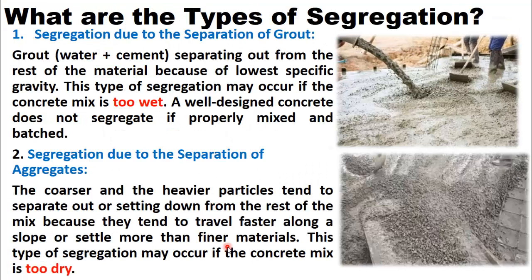What are the types of segregation? There are two types. The first is segregation due to separation of grout — that is, water plus cement. Grout separates out from the rest of the material because of its lowest specific gravity. This type of segregation may occur if the concrete is too wet, as you can see in this picture. A well-designed concrete does not segregate if properly mixed and batched.